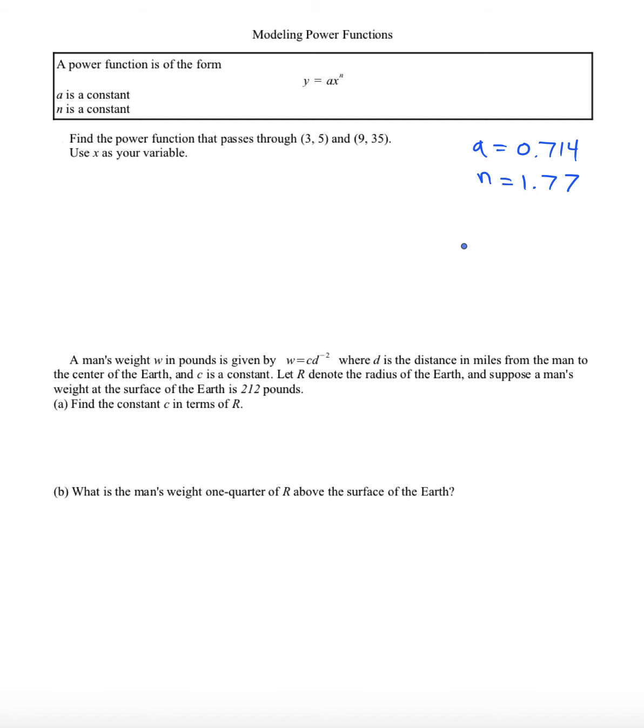All right, now we can construct the power function. It'll be y equals 0.714 times x to the power of 1.77. And it's worth noting this is an approximation so I'll use a squiggle here just to indicate that.